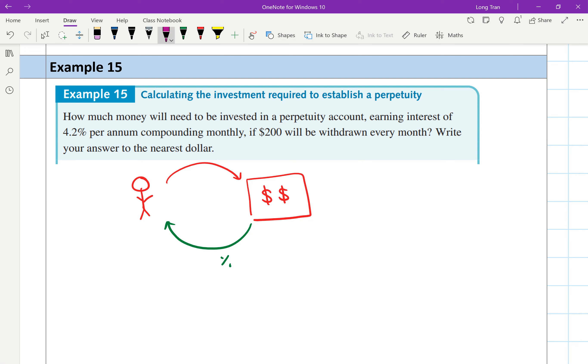How much money will need to be invested in a perpetuity account earning interest of 4.2% per annum. So we now know the interest rate is 4.2% per annum.